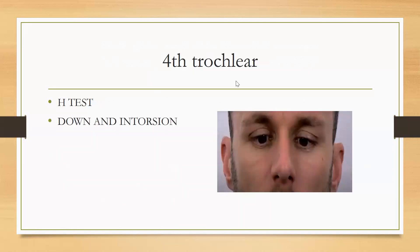Number four is the trochlear nerve. We can use the H-test, but we specifically look for downward and intorsion movement. We can keep our fingers in the center — this is intorsion. If the patient can do it, the trochlear nerve is intact. If he can't, it means there is a trochlear nerve palsy.